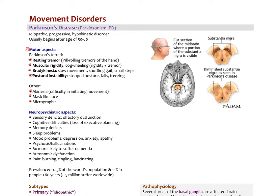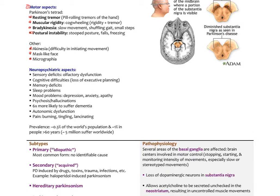Parkinson's also has significant neuropsychiatric aspects. Sensory deficits include olfactory dysfunction — one of the earliest signs — where people lose the ability to smell or perceive unusual smells. Cognitive deficits include loss of executive planning and memory. There can also be sleep problems, mood issues with depression, anxiety, apathy, and potentially psychosis and hallucinations. Parkinson's patients are up to six times more likely to suffer from dementia. Autonomic dysfunction affecting bladder and bowel, and sensations of pain, burning, tingling, and lancinating pain are also common.